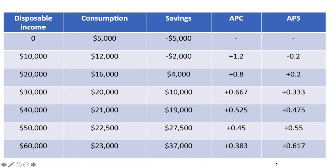Your answers should match what you see here. To calculate APC, we just divide consumption by disposable income. Similarly for APS, we just divide total savings by disposable income.